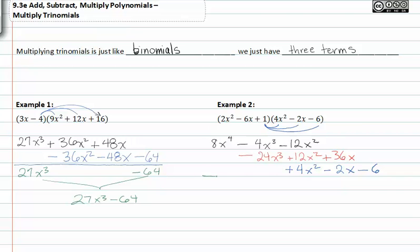I can now add all my terms together. Combining like terms, I can just add my columns down and I get 8x⁴ minus 28x³, plus 4x², plus 34x minus 6.